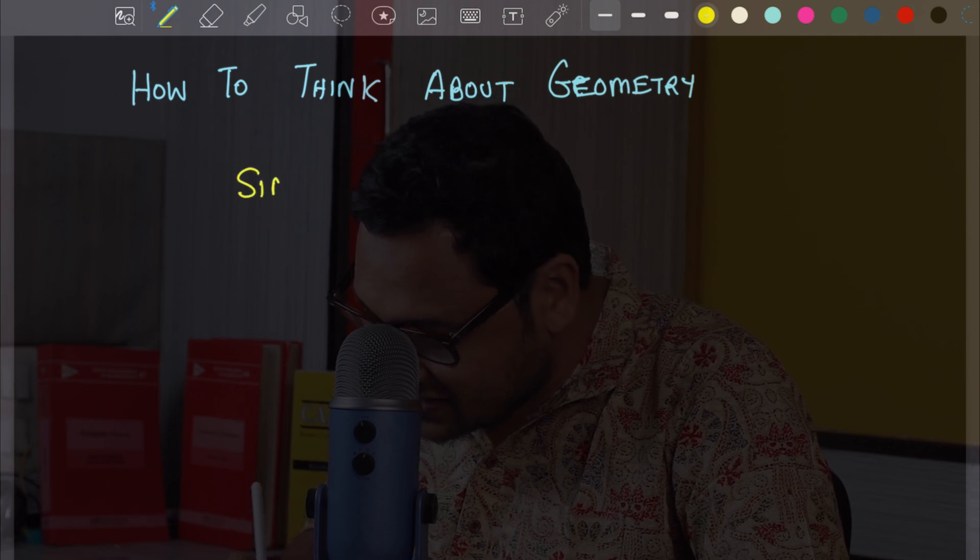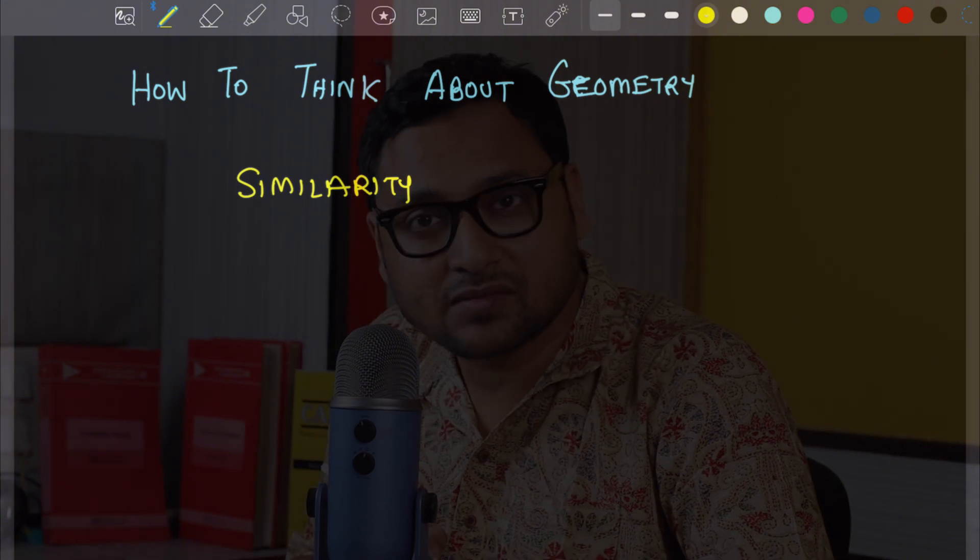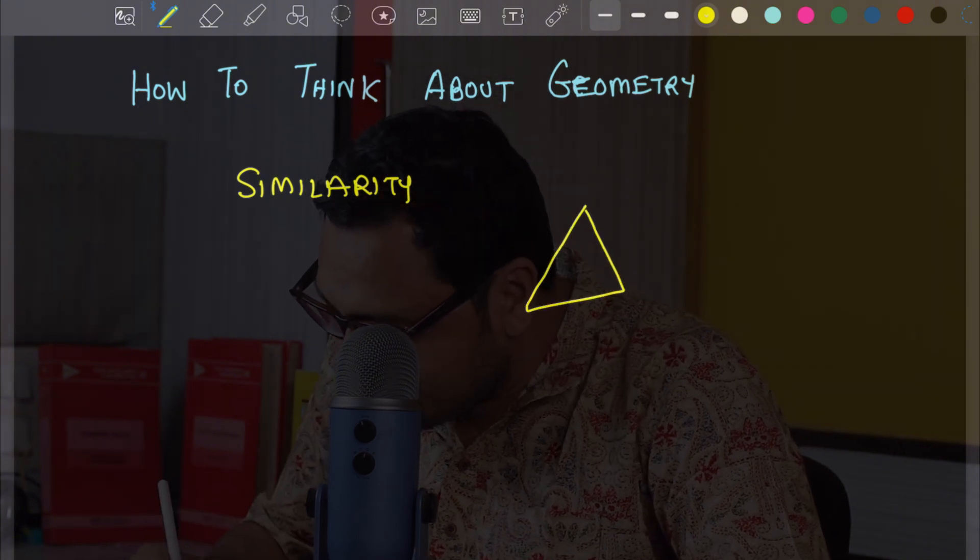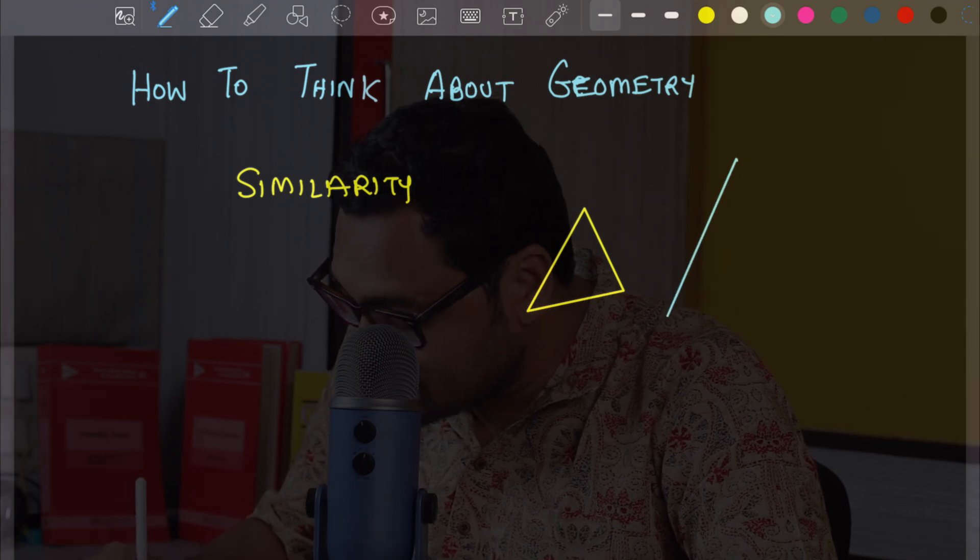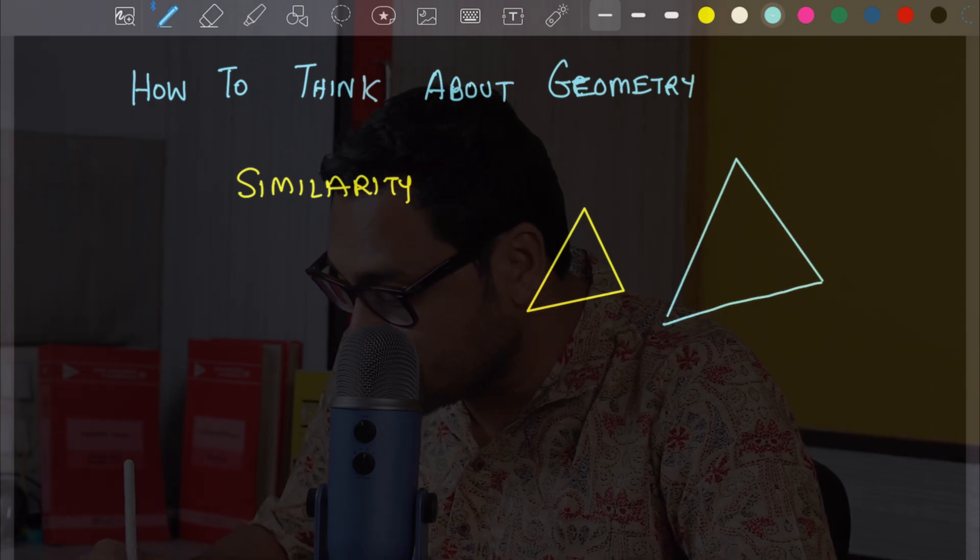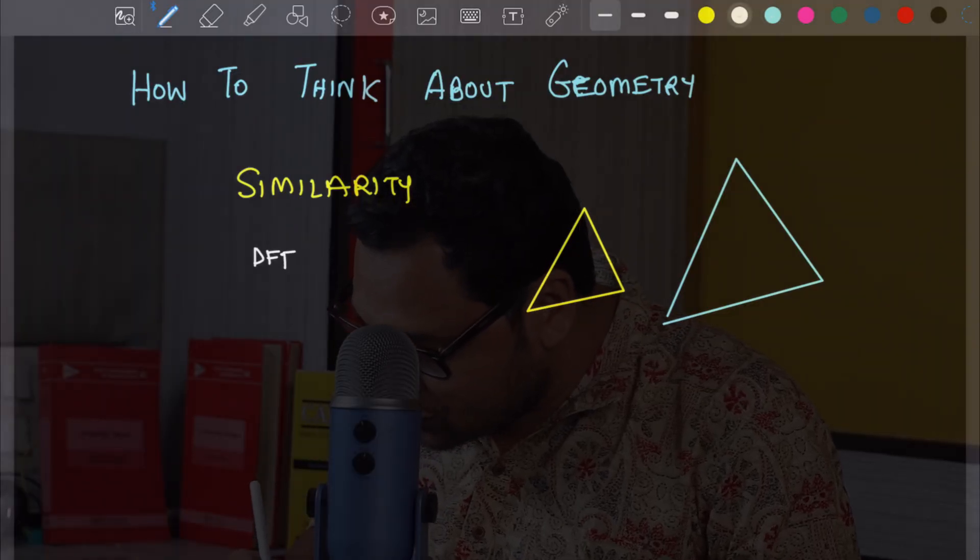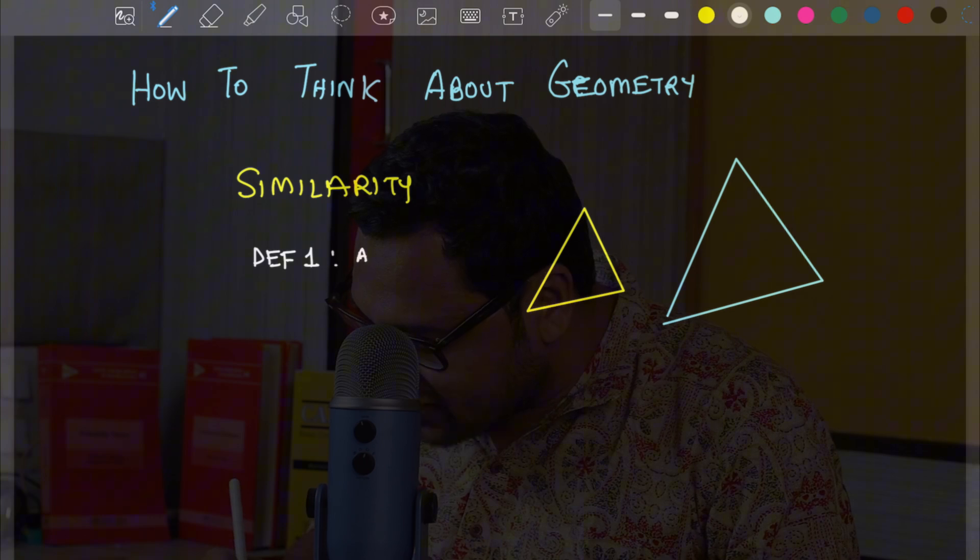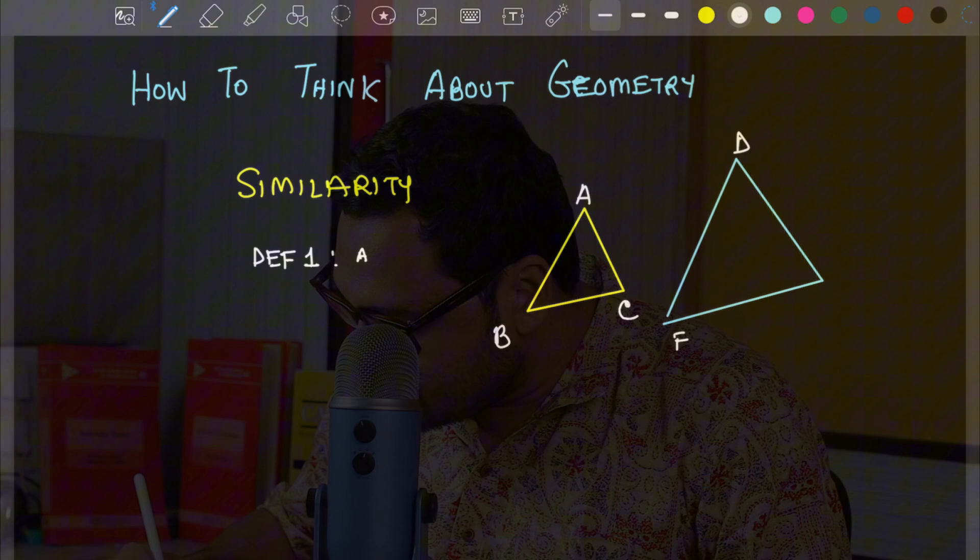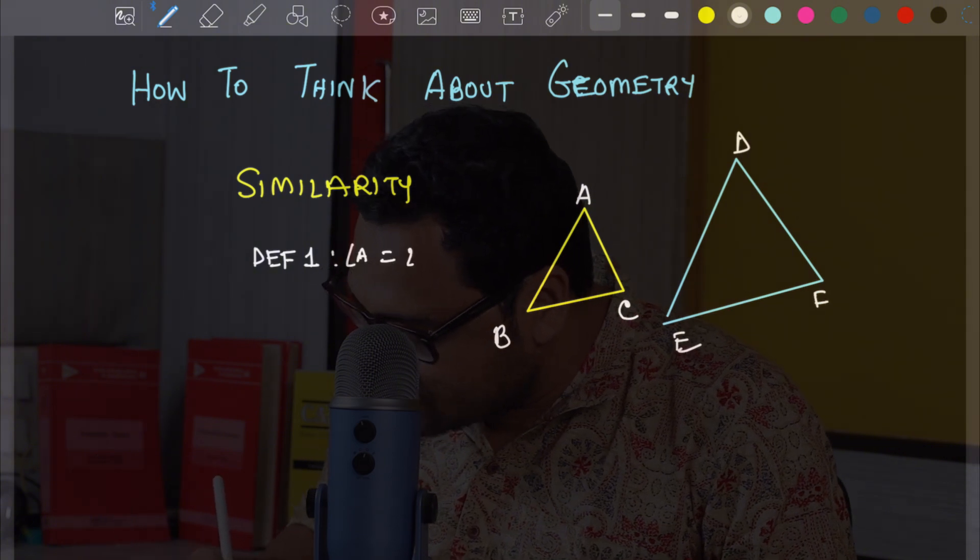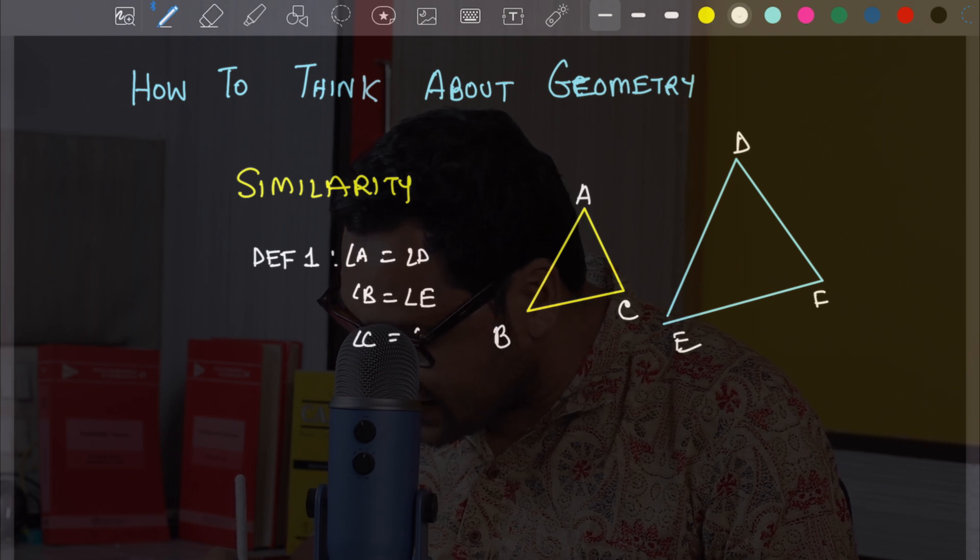It's called similarity of triangles. And there are two ways people talk about it. One of them is through angles. The other one is through proportionality of sides. So what is definition 1? Definition 1 is all angles. So if this is ABC, and if this is DEF, then the definition is angle A equals angle D, angle B equals angle E, and angle C equals angle F.